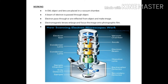First point in electron microscope: object and lens are placed in a vacuum chamber. Electron gun se electron aur jo is mein lens pada hai woh vacuum chamber mein hai. A beam of electrons is passed through an object — specimen mein se beam of electrons pass hogi. Reflected from object and make image. Electromagnetic lenses enlarge and focus the image onto photographic film. Toh is ka hum screen par ya kisi photographic film par image secure kar sakte hain.